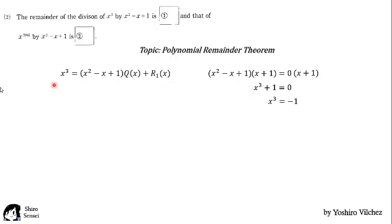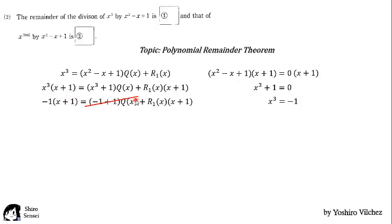Now here we multiply both sides by x plus 1. Replace this value x cubed equal to minus 1 here. Cancel out the 0. And finally get that the remainder is equal to minus 1.